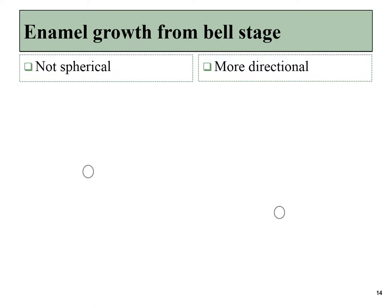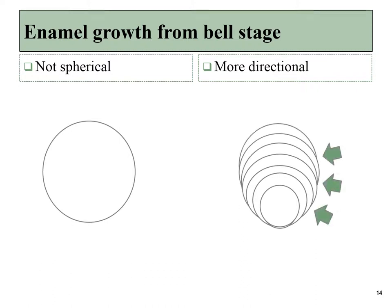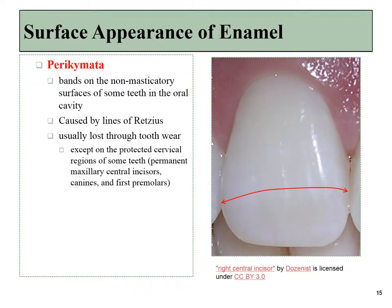Each layer of enamel does not completely surround the old one. Teeth are not spheres — they have a more distinct shape, and for that reason the enamel must be laid down in a more directional fashion. Because of that, when the tooth is fully formed, we can see some of these lines between layers at the surface of the tooth. So when a tooth is newly erupted, you may be able to notice the perikymata, or banding on the non-masticatory surfaces of teeth in the oral cavity. These are usually lost through wear and tear over time.